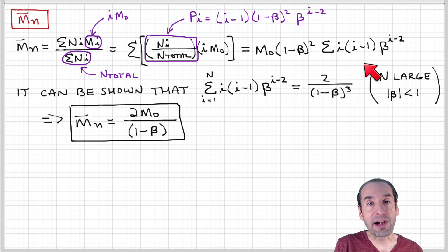Again, subject to our typical considerations that n is big, so we're summing over a large number of terms, and beta is less than 1, or the magnitude of beta is less than 1. So this summation converges to this quantity.